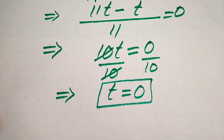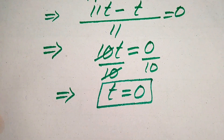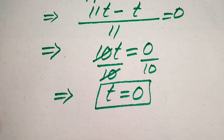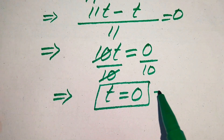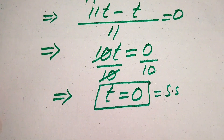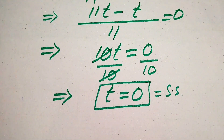This is the value of t from Method 2, and we already verified this value in Method 1. So t equals 0 is the solution of the given equation. This is our final answer. Thank you for watching this video — please subscribe to my channel for more videos.